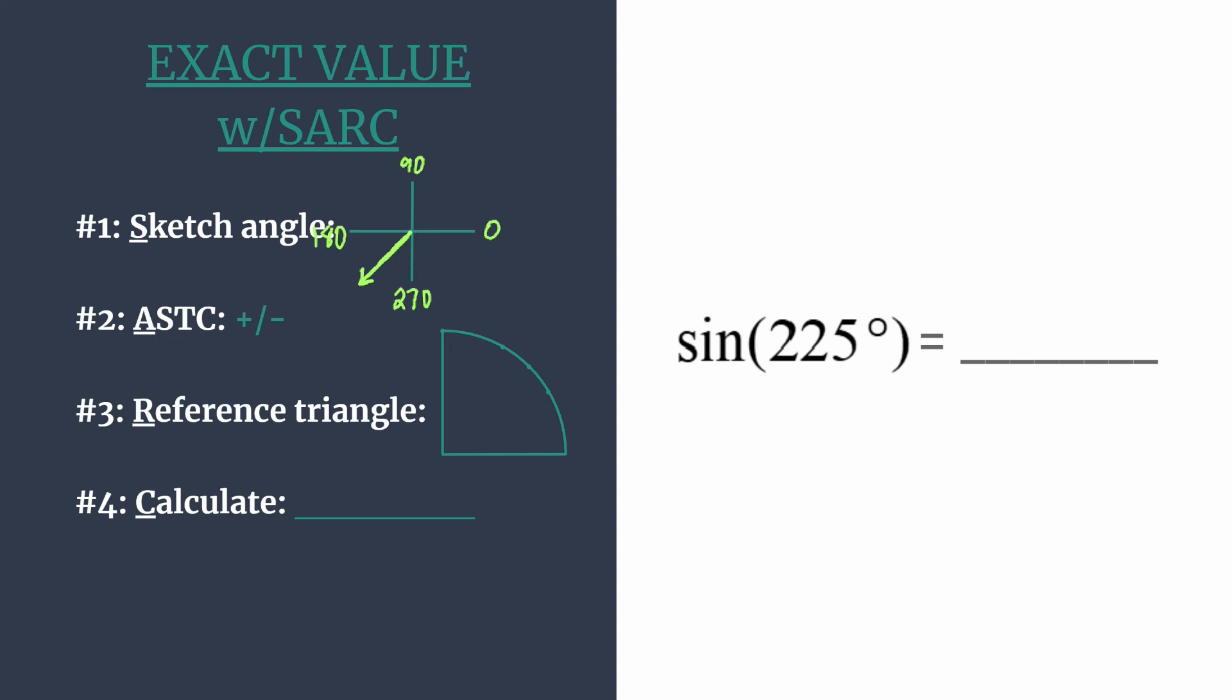Now that we know where our terminal side is, it's in quadrant three, we can use ASTC to know if our sine of 225 is positive or negative. Think all students take classes. You work your way around starting in quadrant one, all trig functions are positive. In quadrant two, sine and its reciprocal cosecant are positive. We want quadrant three, where tangent and cotangent are positive.